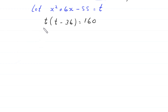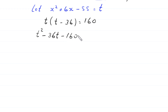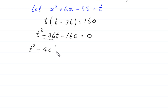Now we distribute t. This will become t squared minus 36t. We move 160 to the left hand side, giving us t squared minus 36t minus 160 is equal to 0. This is a quadratic equation and is factorable. We write t squared and break negative 36t into negative 40t plus 4t minus 160 is equal to 0.